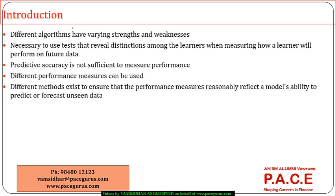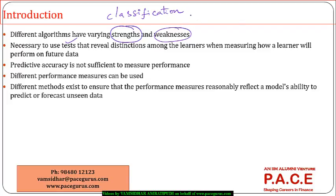For each specific purpose — let's say classification — we have different algorithms, each with their own advantages and disadvantages. I need some kind of testing mechanism, like an exam, to determine which of all these classification algorithms performed the best. There should be some kind of test that clearly brings out which algorithm has done really better compared to the others when the same task and the same data has been given for learning.